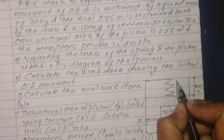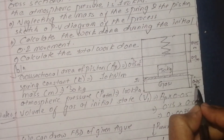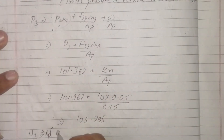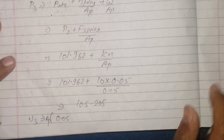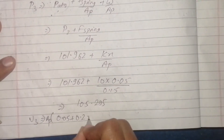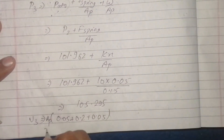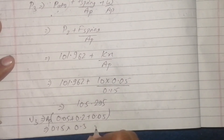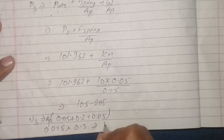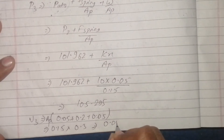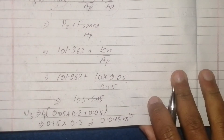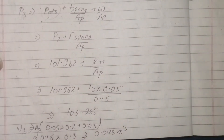For volume V3: distance = 0.05 + 0.2 + 0.05 = 0.3 meters. V3 = A_p × 0.3 = 0.15 × 0.3 = 0.045 meter cube.